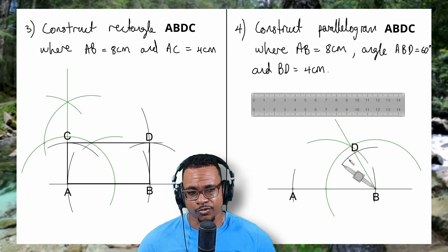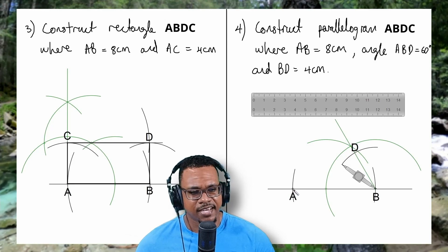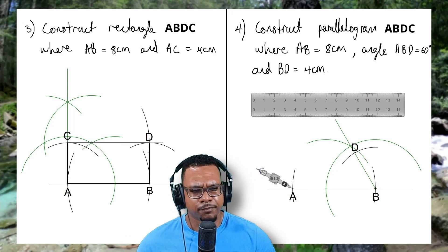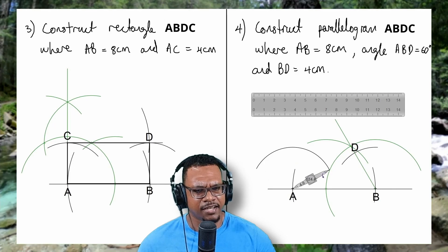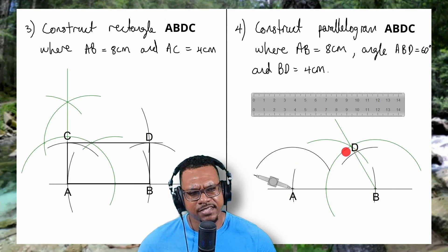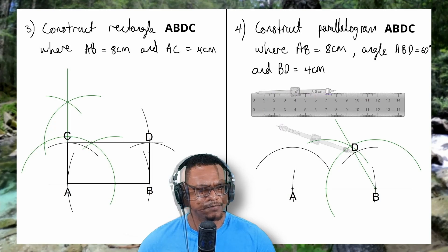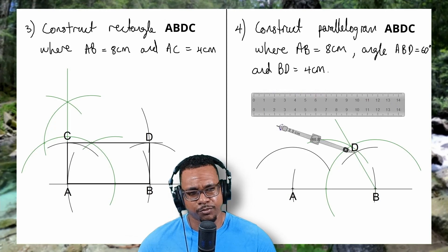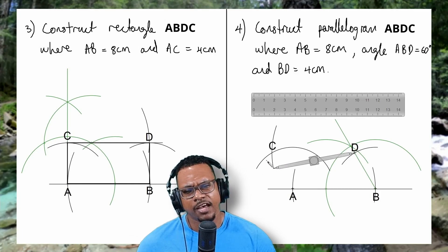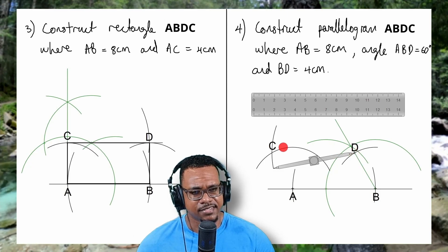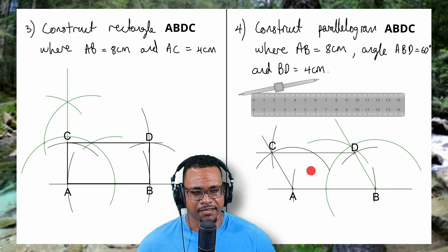Now seeing that my compass is still open to 4cm, I know that side AC would be 4cm and parallel to side BD. So I'll place my compass point at A and make an arc. Knowing that side DC is parallel to AB and also 8cm long, I'll open my compass back out to 8cm, place it at point D and make an arc. Where these two arcs intersect will be called point C. So now it's just to take a ruler and connect points D to C, and C to A. My last step is to darken my final outline.